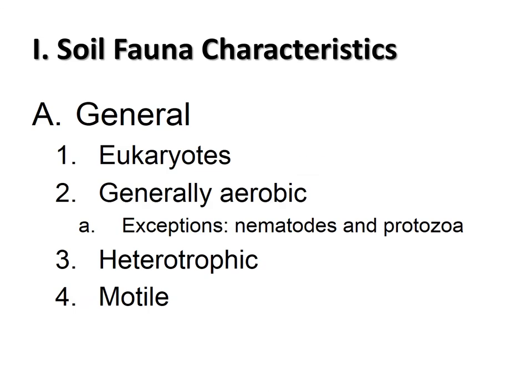We continue with soil fauna, another important group using soil as a habitat. We will learn more about soil fauna and how they interrelate and react with microorganisms. Fauna is characterized as being eukaryotes with eukaryotic cells. They are usually aerobic, with some exceptions among nematodes and protozoa. They are heterotrophic, meaning they don't synthesize their own food but rely on organic carbon. They are also able to move and have means of motility.